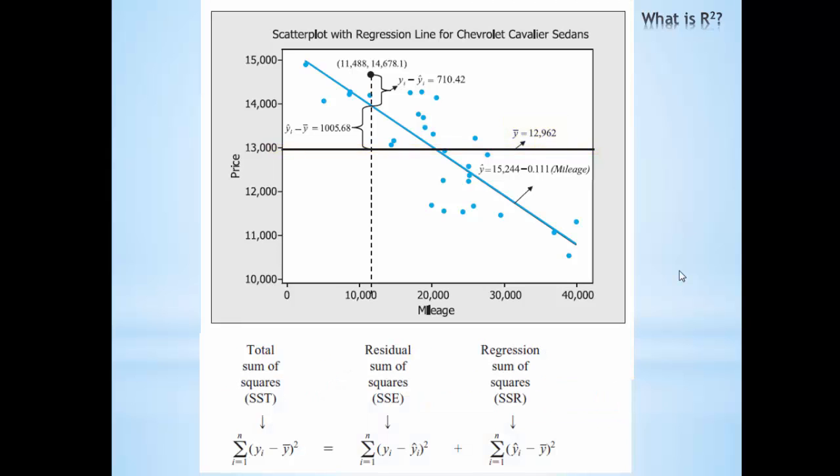Our R-squared value is based on calculating the squared differences between these three different y-values. The sum of squares residuals is the squared difference between every single observed value and predicted value. The regression sum of squares is the sum of the squared distances between the regression line and the overall mean for each individual point. And the total sum of squares is the sum of the squared distances between the observed values and the overall mean.